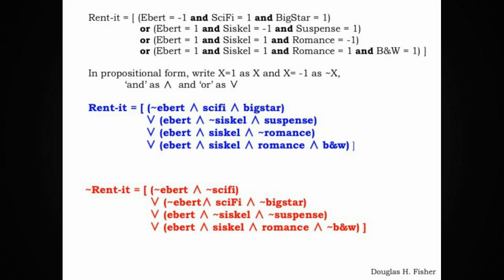Here are the two disjunctive normal form representations for both rented and not rented. I've just rewritten them very slightly, replacing the word OR with the V inclusive OR symbol and with the caret AND symbol.